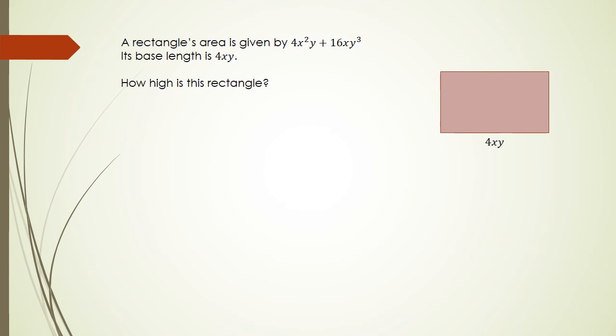In this case we've got a rectangle's area given by 4x²y + 16xy³, its base length is 4xy. How high is the rectangle? We know that area of a rectangle can be written as base times height, so the area equals 4x²y + 16xy³ equals base is 4xy multiplied by height.